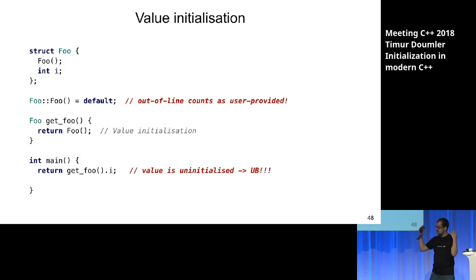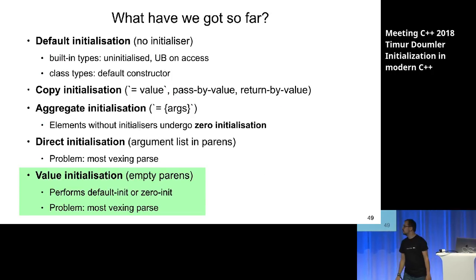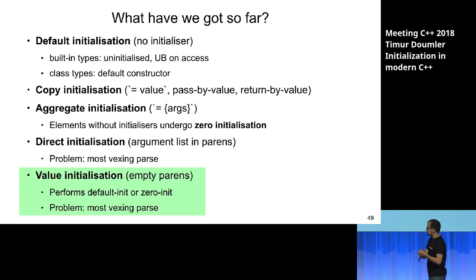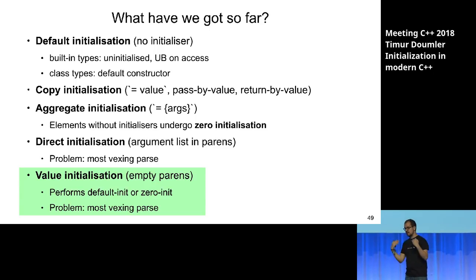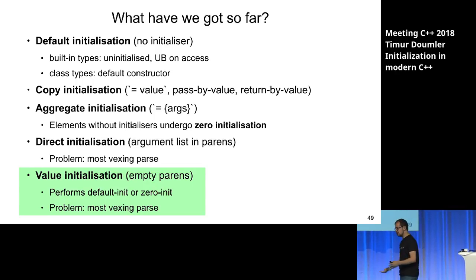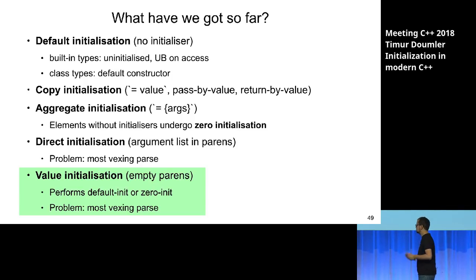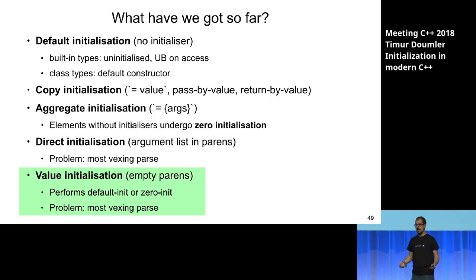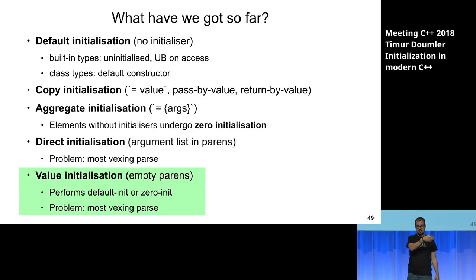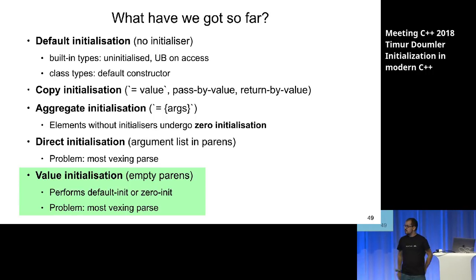To summarize: we have the C initialization types, then C++98 introduces direct initialization, and then C++03 gives us value initialization — empty parens that perform either default initialization or zero initialization depending on whether you have a user-provided default constructor. And of course the empty-parens syntax also suffers from the most vexing parse problem: if you write `foo foo()`, you don't get a value-initialized foo — instead you declare a function that takes no arguments and returns a foo.